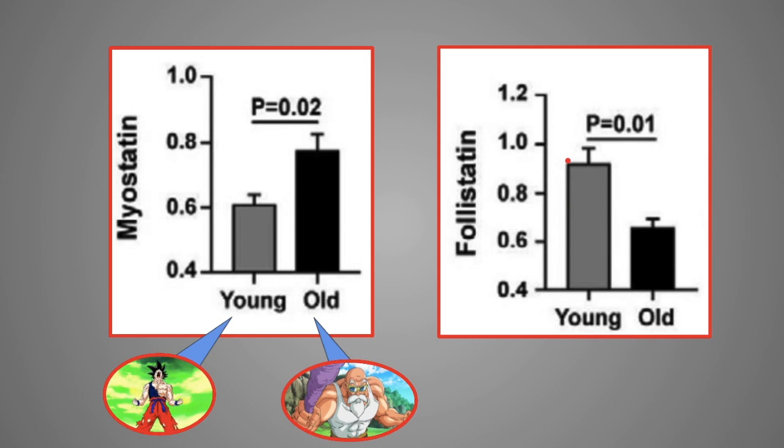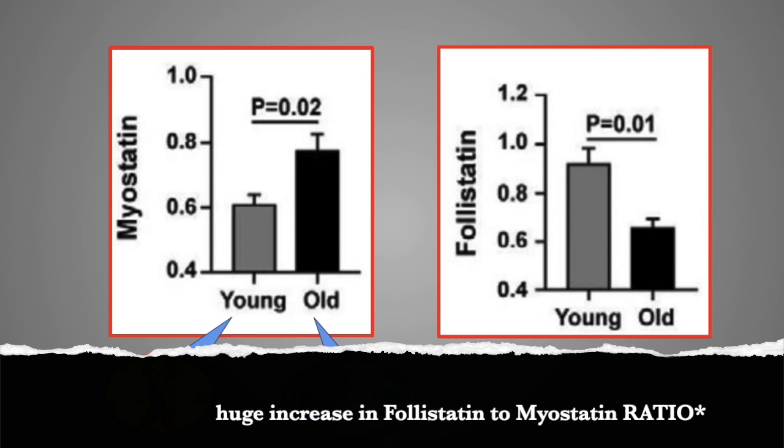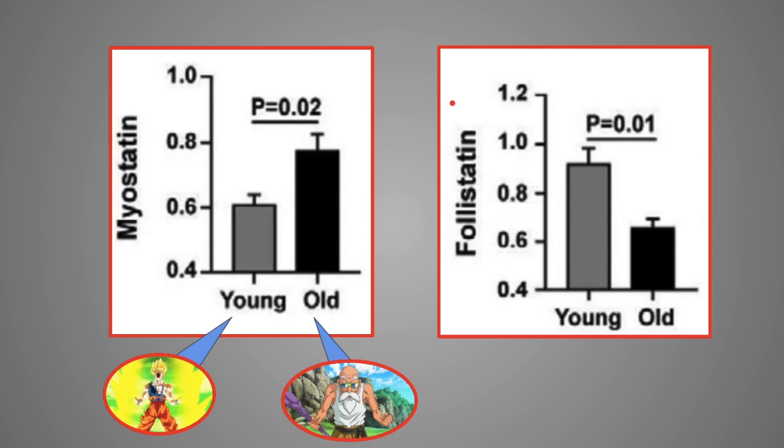The same is also true for our follistatin levels. As you can see, the young group had higher levels of follistatin, while the old group had lower levels. And after they supplemented with epicatechin for seven days, they had a 7% increase in hand grip strength and a huge increase in their follistatin to myostatin levels. So as you can clearly see guys, epicatechin has anabolic effects.